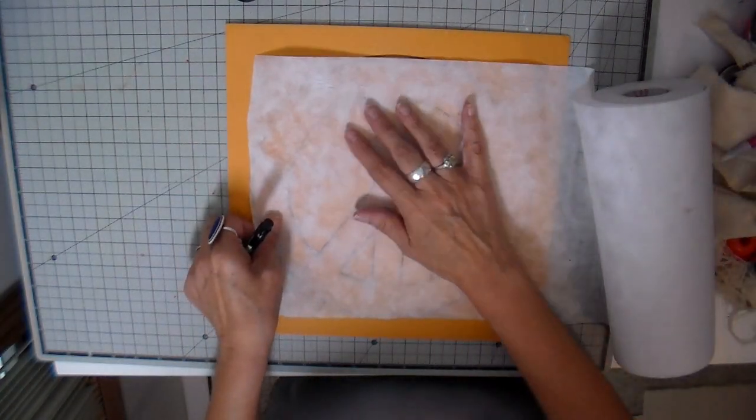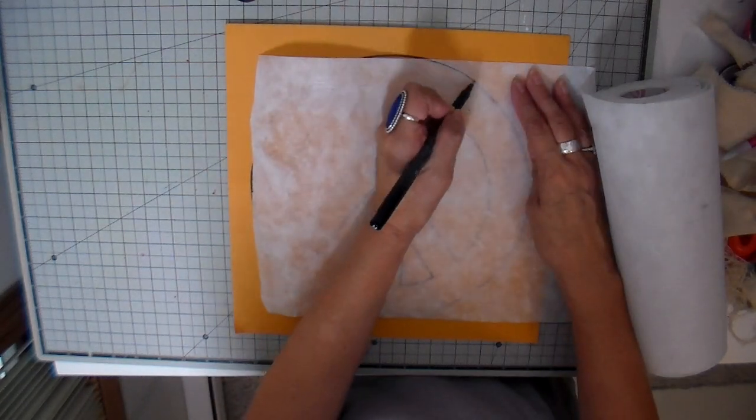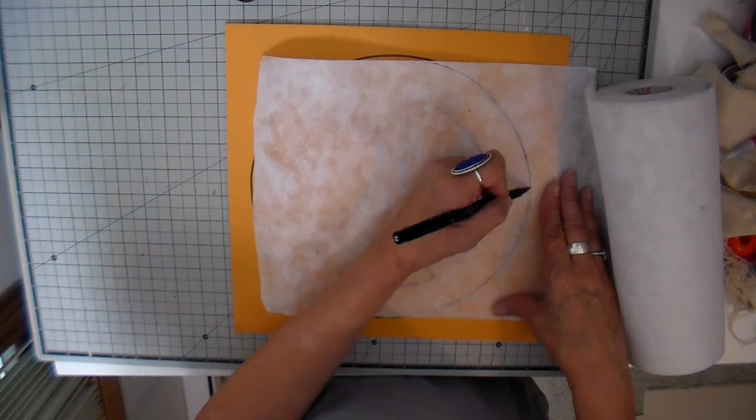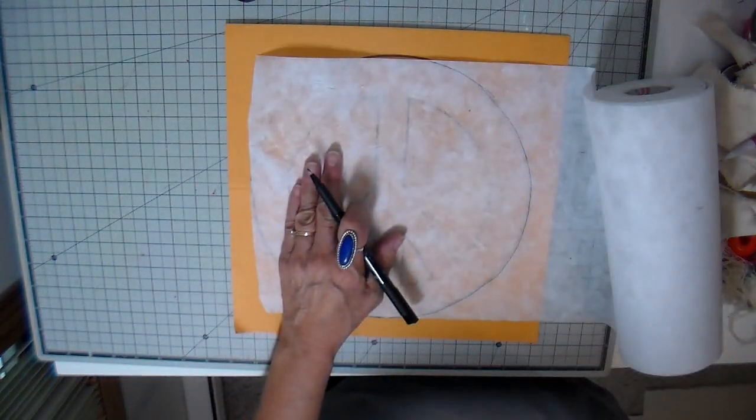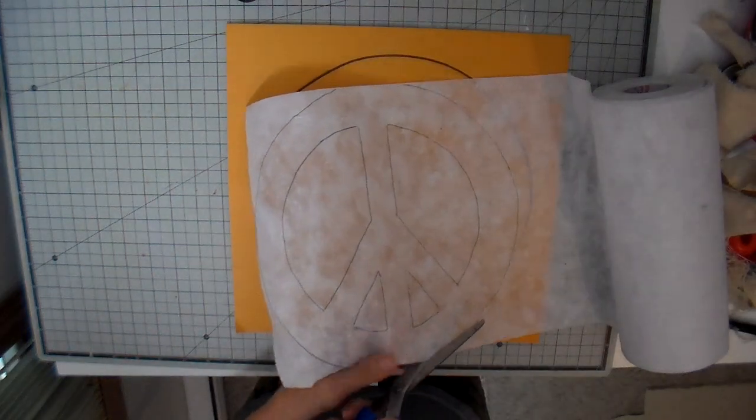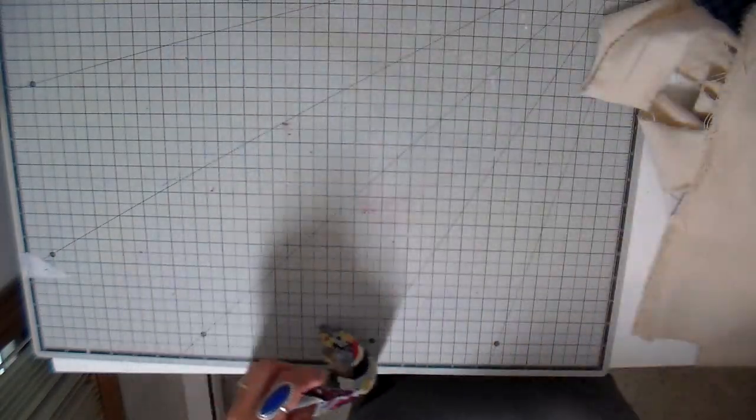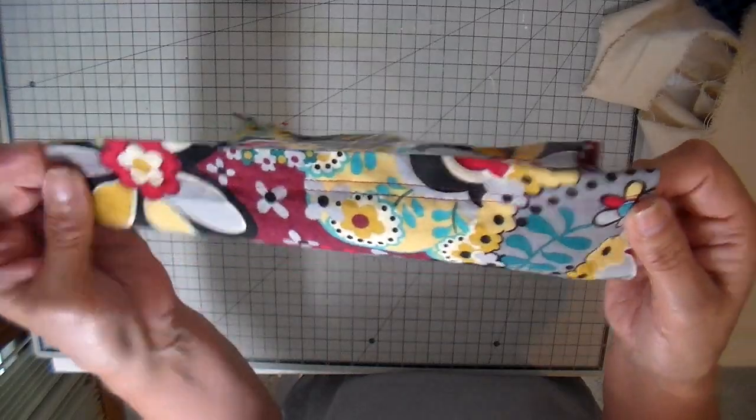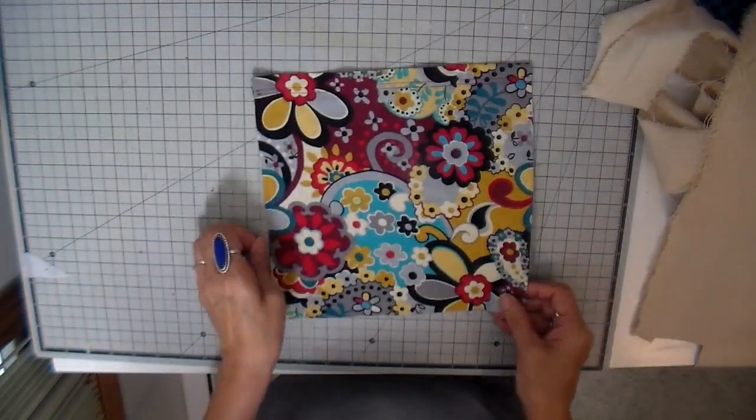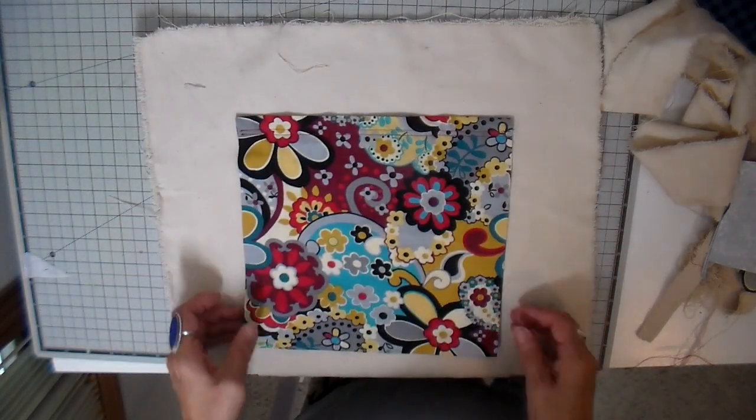For my peace sign I'm just using my tear away stabilizer to draw this design. This stabilizer is just paper that has been recycled and it's just a nice weight and easily bendable for these designs. So I'm cutting that out and then I also have a patch pocket that I finished the top and folded under the edges and that'll get just pinned on the back side.